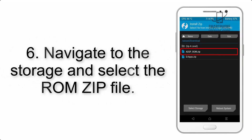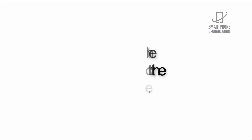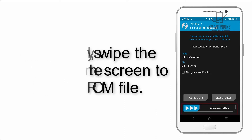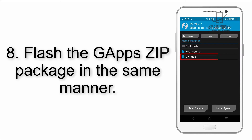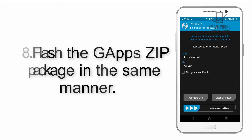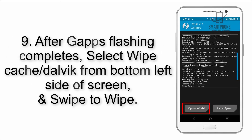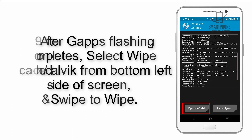Step 6: Navigate to the storage and select the ROM zip file. Step 7: Swipe the button on the screen to install the ROM file. Step 8: Flash the Gapps zip package in the same manner.